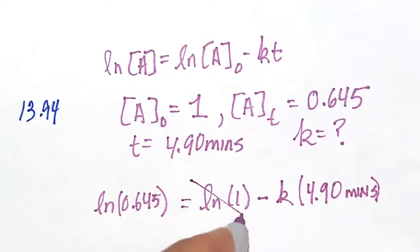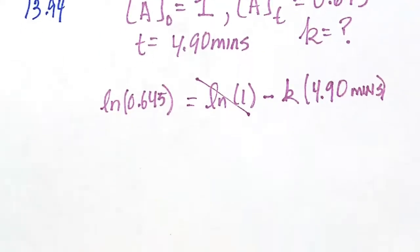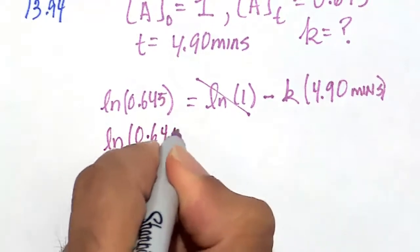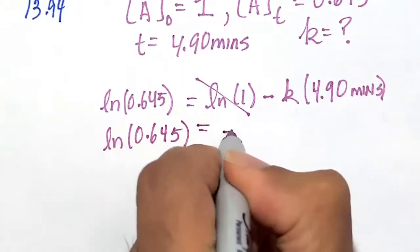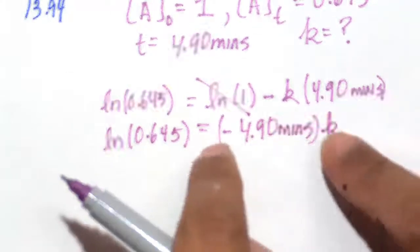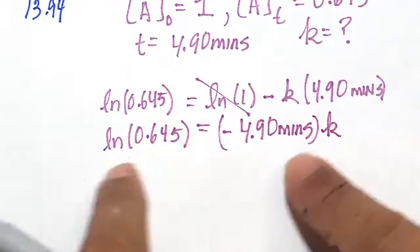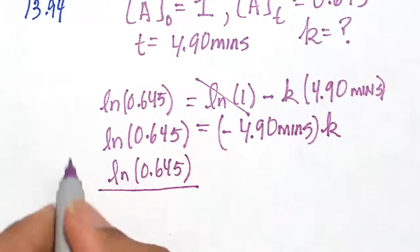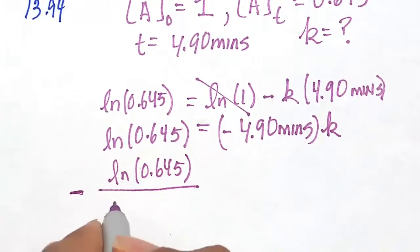Like I said before, this is 0. So that is gone. So what we have here is natural log of 0.645 equals to minus 4.90 minutes K. I'm going to take that minus 4.90 minutes and then divide it. It's perfectly algebraically legal, divided by minus. I'll just keep my minus sign here. Minus 4.90 minutes.